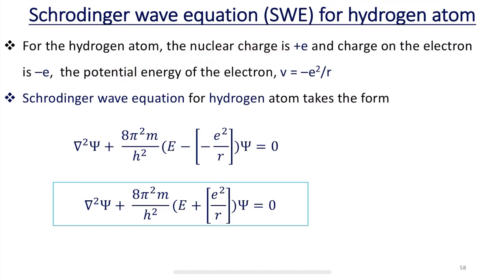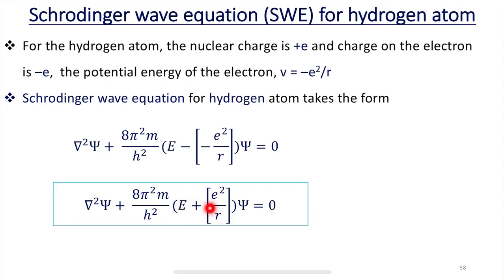For the hydrogen atom, the nuclear charge is +e and the charge on the electron is −e, so the potential energy is V = −e²/R. Applying the Schrödinger wave equation for the hydrogen atom, it takes the form: ∇²ψ + (8π²M/h²)(E − V)ψ = 0. Substituting V = −e²/R, this becomes ∇²ψ + (8π²M/h²)(E + e²/R)ψ = 0, since minus times minus gives plus. Let us call this equation 1.